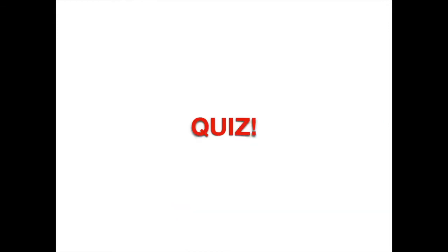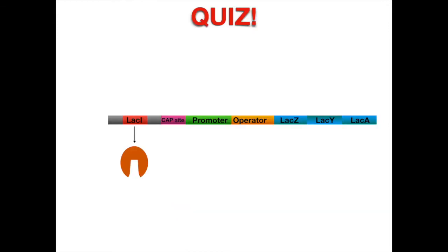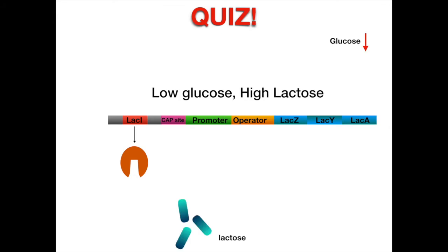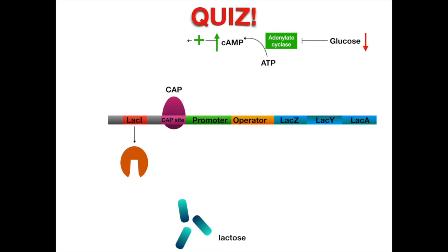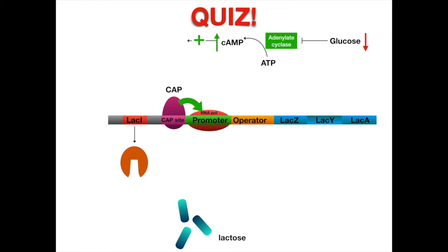Quiz time. We will give you a state of the environment of the lac operon, and you will tell us if lac genes are expressed and why. Low glucose and high lactose. Lac genes are strongly expressed because low glucose increases cyclic AMP levels through adenylate cyclase, which stimulates CAP binding to the CAP binding site, which stimulates RNA polymerase binding. Along with this, lactose will remove the repressor from the operator.